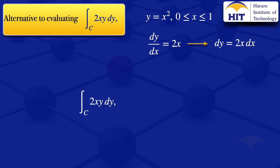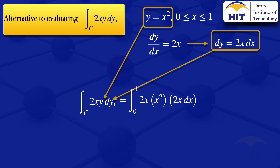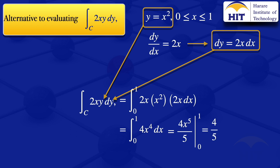We substitute y equals x squared and dy equals 2x dx into the integral. The integral becomes the integral from 0 to 1 of 2x multiplied by x squared multiplied by 2x dx, which simplifies to the integral from 0 to 1 of 4x to the power 4 with respect to x. Integrating gives 4x to the power 5 divided by 5 with limits 0 to 1, yielding 4 over 5 — the same result as before, but sometimes this method is easier.